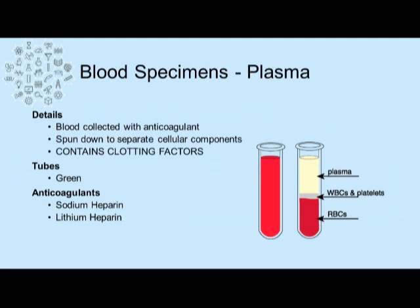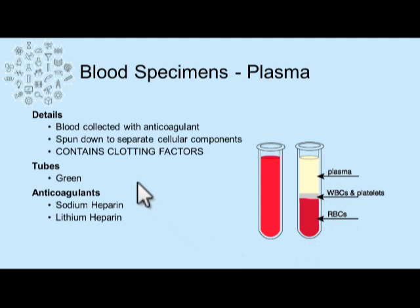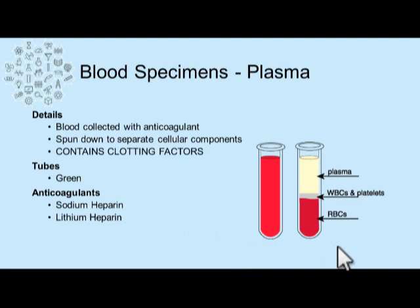In plasma, there is an anticoagulant present in the tube which prevents the blood from clotting. It's then spun down, the cellular components go to the bottom of the tube, and the liquid portion up top still contains the clotting factors. The acceptable plasma-yielding tubes in chemistry are green tubes and contain anticoagulant sodium heparin or lithium heparin, with lithium heparin more often used.